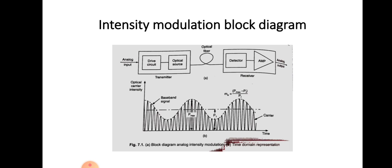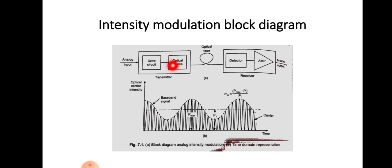You can see that there is an analog input signal which is given to the transmitter side, and the transmission medium is optical fiber, and this is the receiver side. In the transmitter side, there is a drive circuit and an optical source, and the modulation process takes place. This optical source modulates the carrier signal, and the modulated signal will be transmitted through the optical fiber. At the receiver side, the detector will detect and amplify the signal, and it will be given as an analog output.